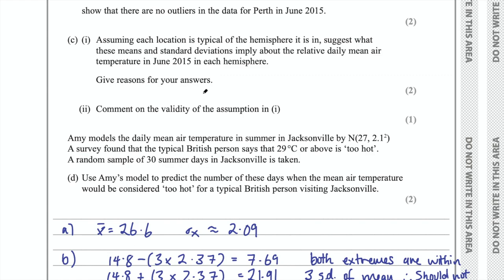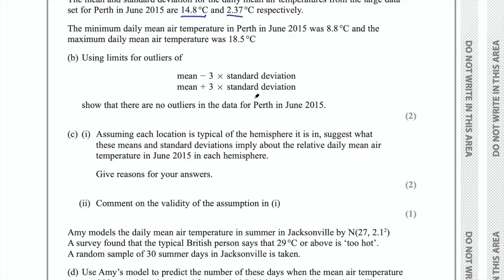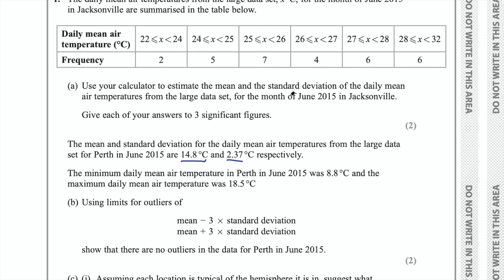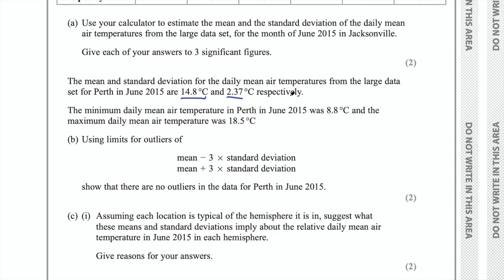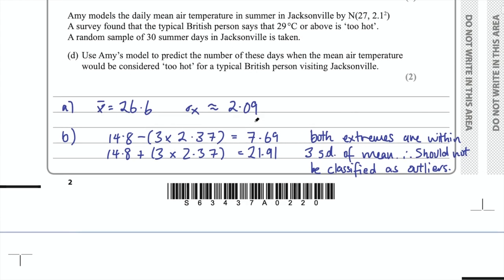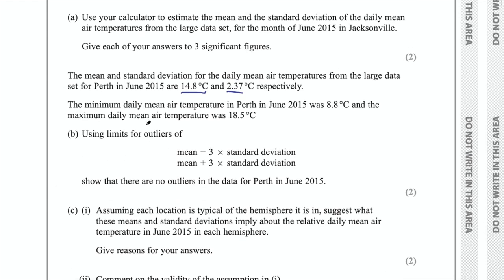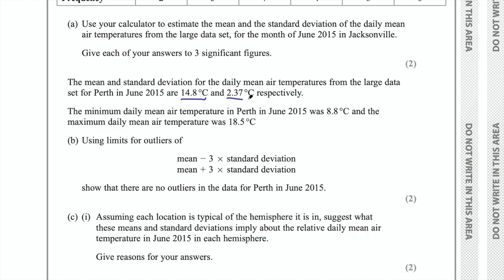That is quite a big assumption — assuming each location is typical of the hemisphere it is in. Perth is in the southern hemisphere in Australia and Jacksonville is in America, the northern hemisphere. Jacksonville would be approximately 26 and 2 for the mean and standard deviation for the northern hemisphere, and Perth is about 15 and 2 for the southern hemisphere. The southern hemisphere has a lower daily mean, the northern hemisphere a higher one. The standard deviations are fairly similar — 2.37 versus 2.09.